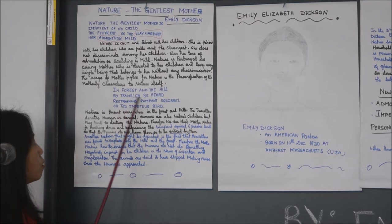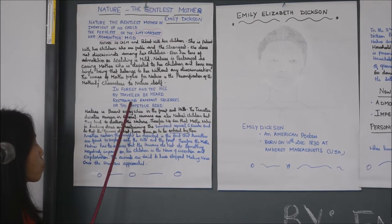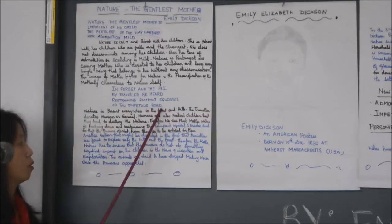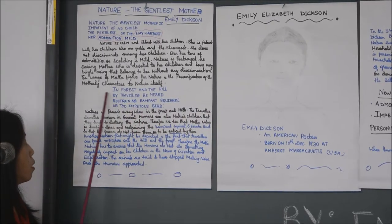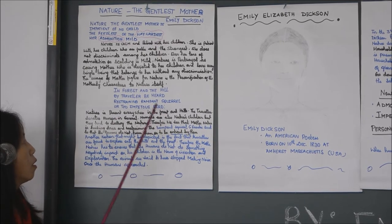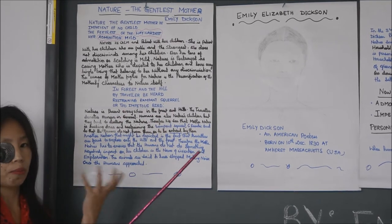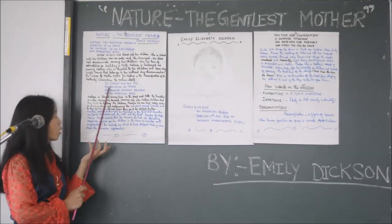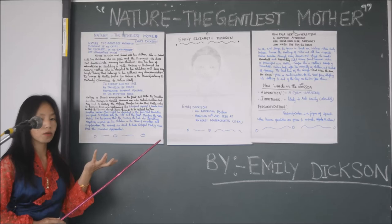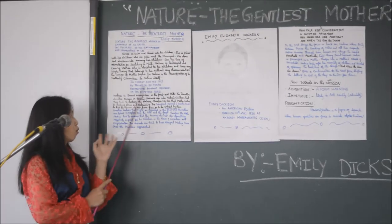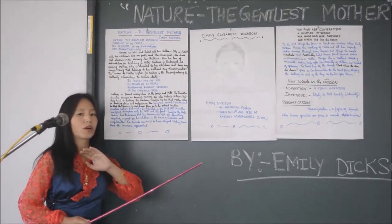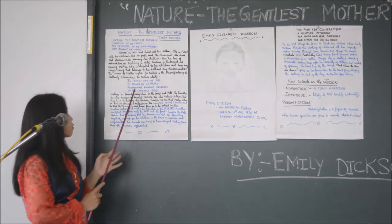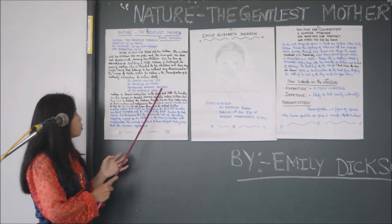The second stanza reads: 'In forest and the hill by traveler be heard, restraining rampant squirrel or two impetuous bird.' The forest and the hills are part of nature. Travelers — meaning human beings — go to the forest and hills to explore and enjoy the beauty of nature.